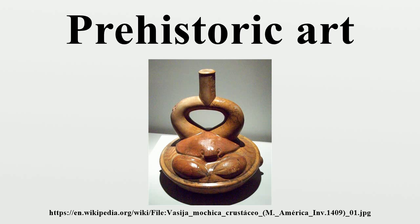Some archaeologists have interpreted certain Middle Paleolithic artifacts as early examples of artistic expression. The symmetry of artifacts and evidence of attention to detail has led some investigators to conceive of Acheulean hand axes and especially laurel points as having been produced with a degree of artistic expression. Similarly, a zigzag etching made with a shark tooth on a freshwater clam shell around 500,000 years ago, associated with Homo erectus, was proposed as the earliest evidence of artistic activity in 2014.